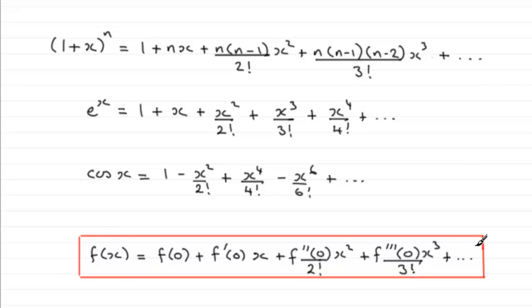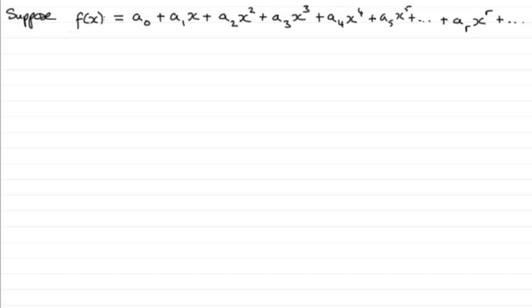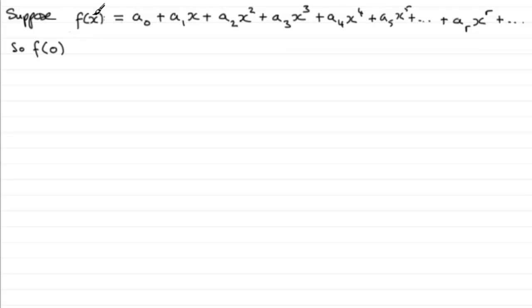To prove the Maclaurin series, suppose f(x) is any function of x, and suppose f(x) can be expanded as a series in ascending powers of x, where the series can be differentiated term by term. So we have something like f(x) = a₀ + a₁x + a₂x² + ..., where a₀, a₁, a₂ and so on are constants. To find the first constant, we substitute x = 0 into f(x), and all terms except a₀ vanish, so a₀ equals f(0).